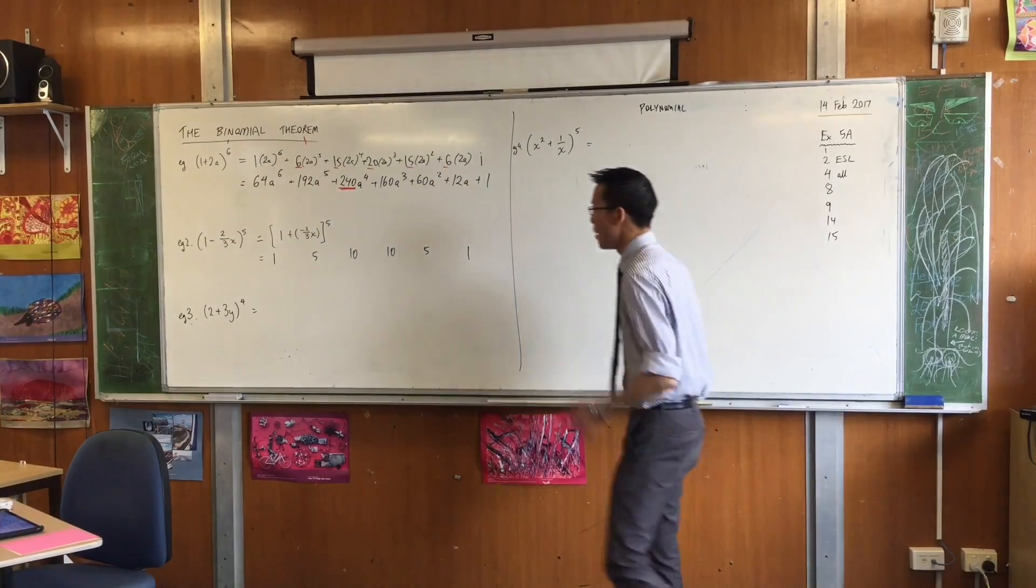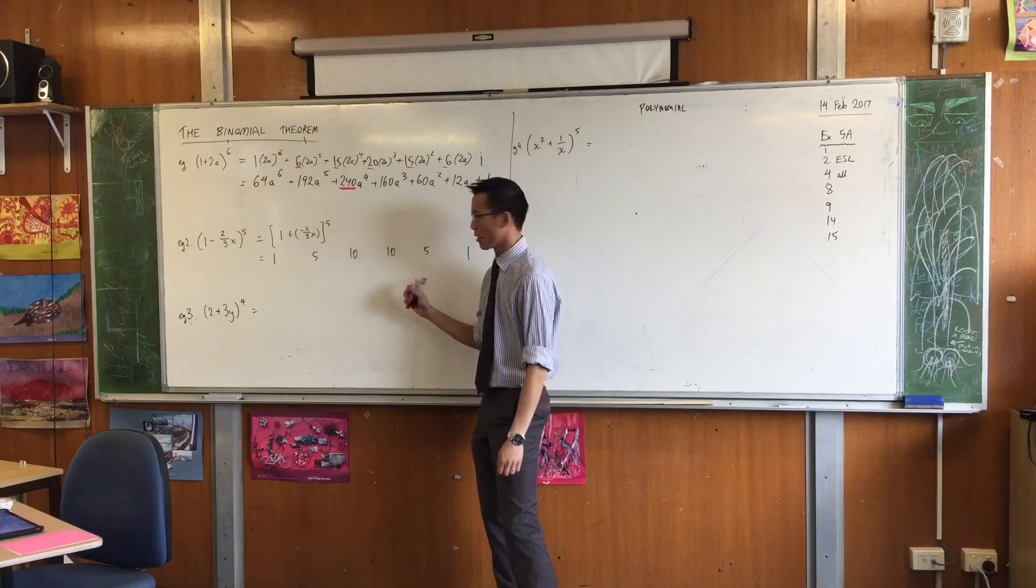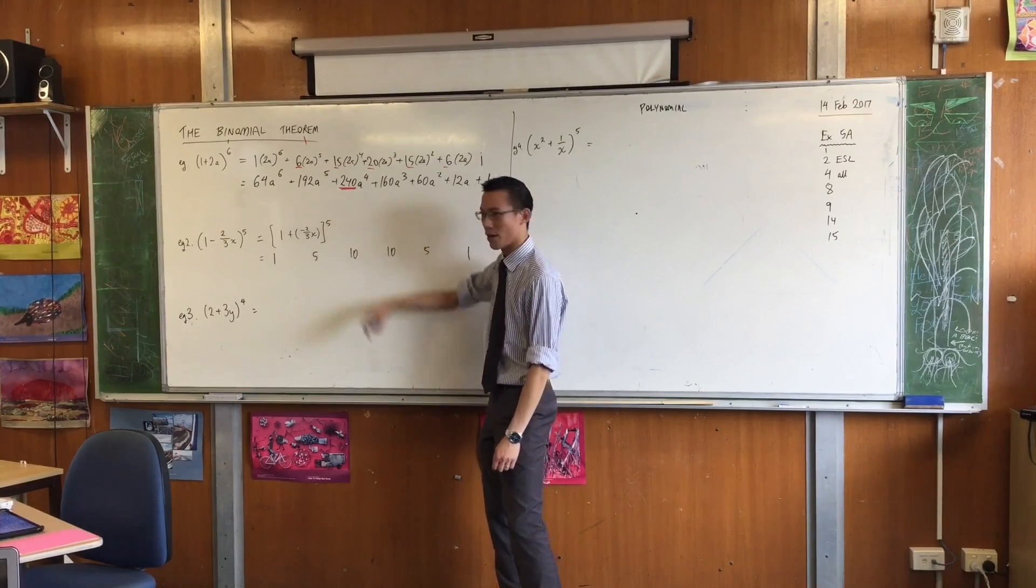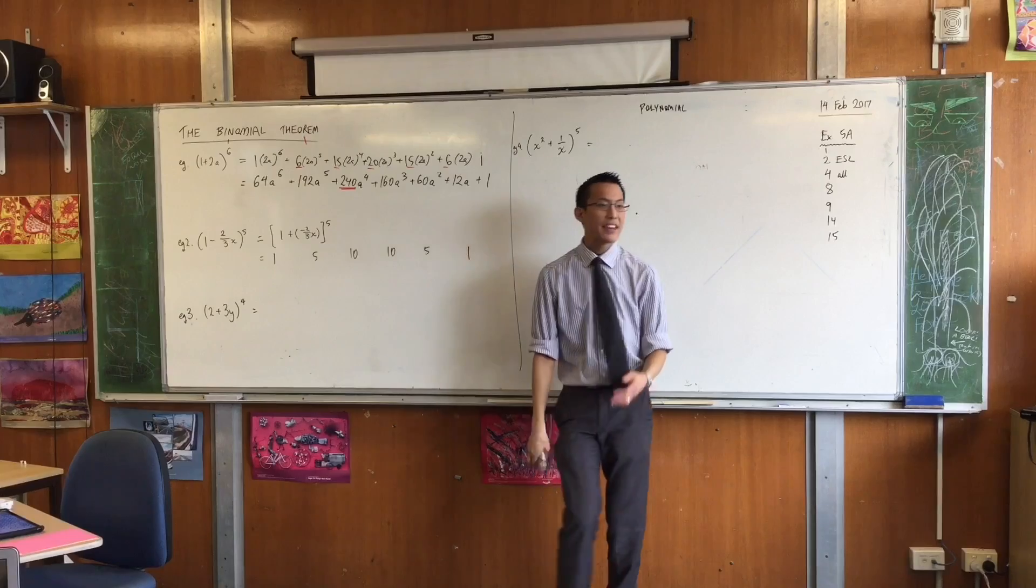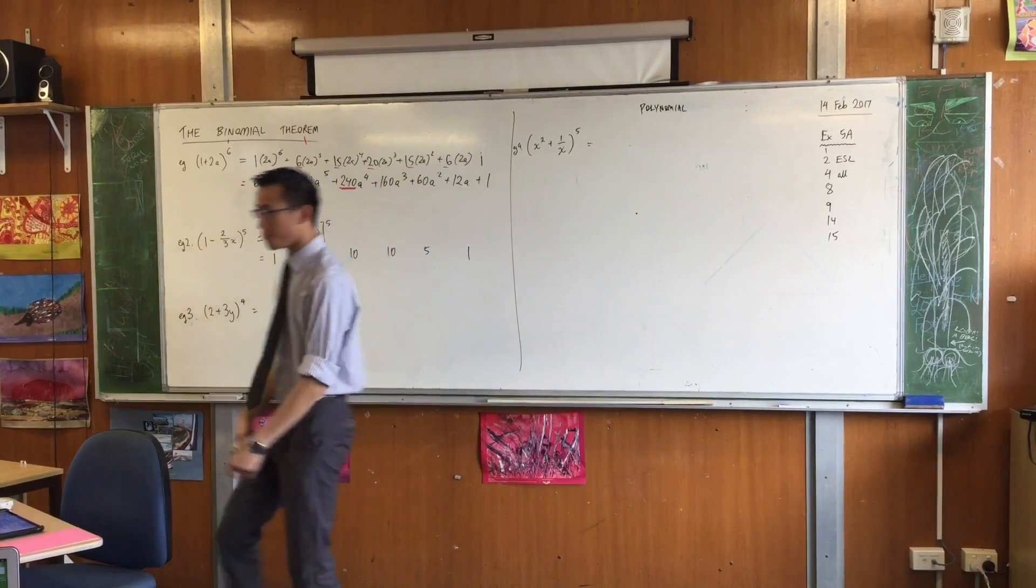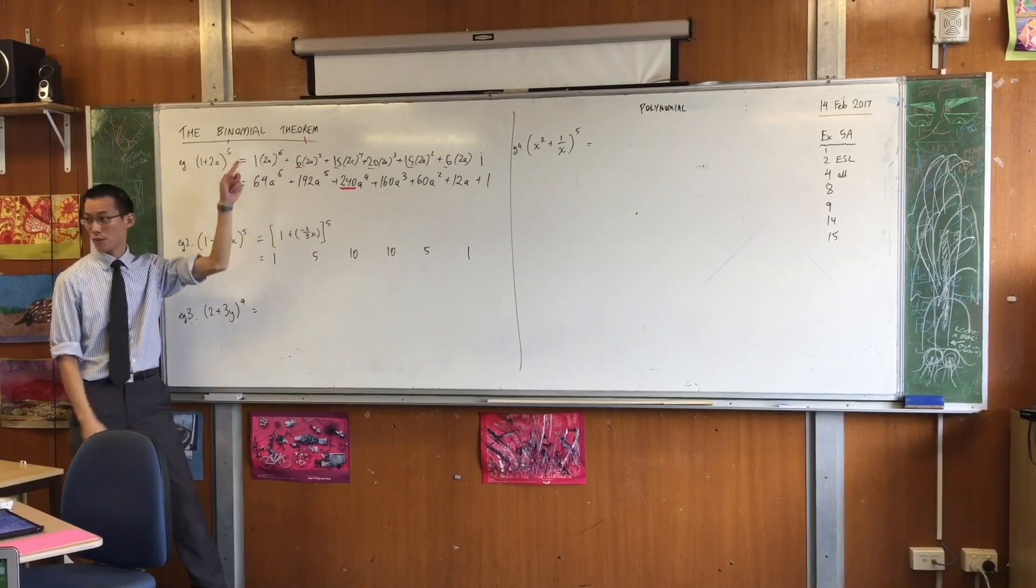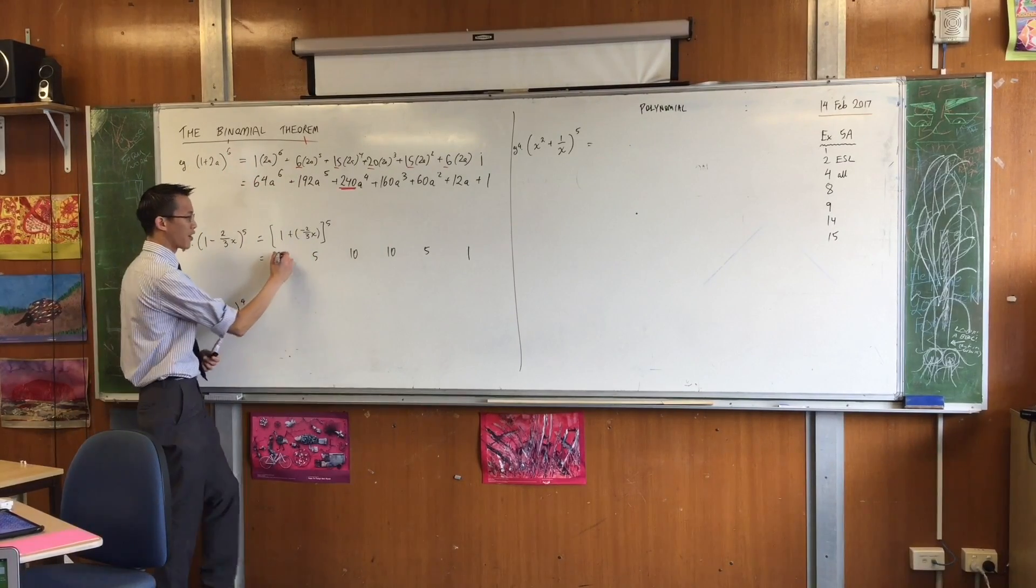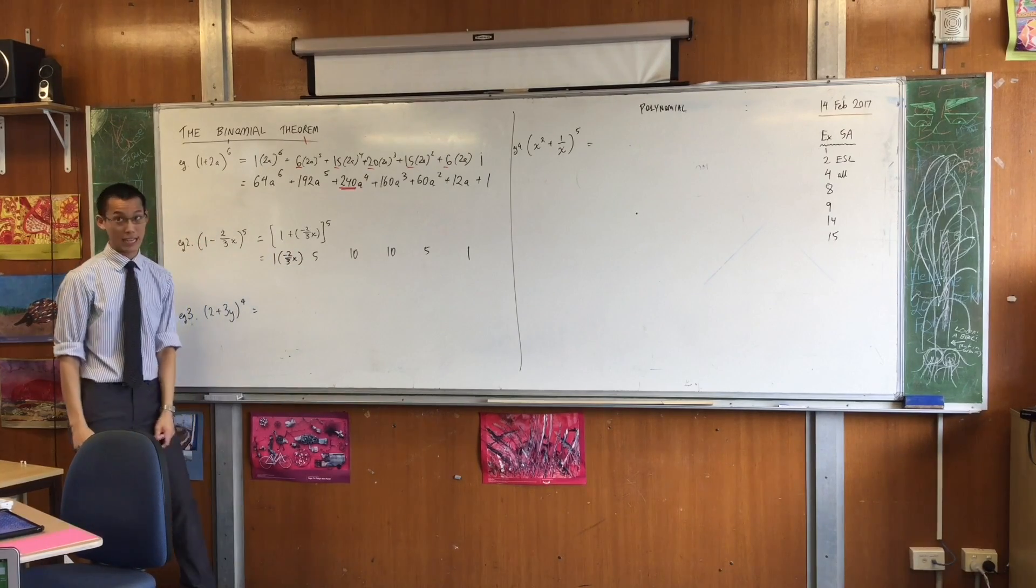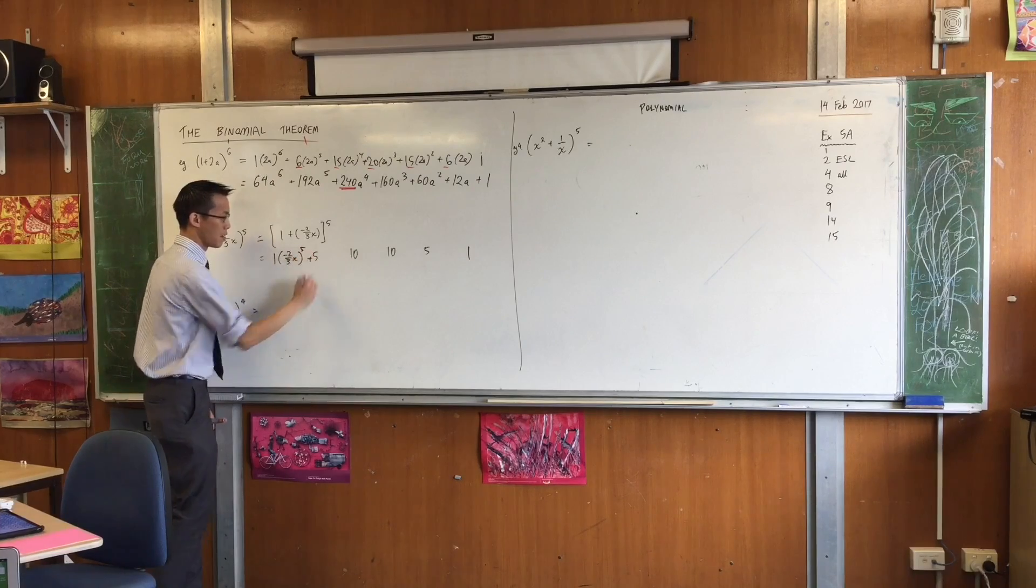You can see I've already begun by having identified the row in Pascal's triangle that I need. Okay, so here's the fifth row. Sorry, here's the fifth power. So here is the fifth row. Now I'm going to slot in all of my other terms. Okay, so have a look. The highest power here will always be the highest power from the original binomial. So in this case, I'm going to have how many powers of negative two-thirds x? Five of them. Done.